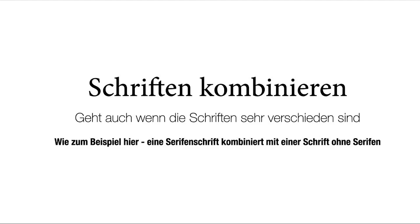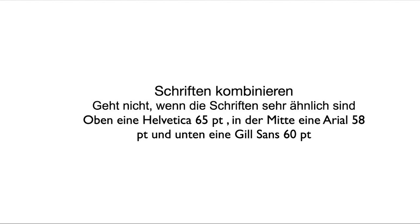Wenn man verschiedene Schriften miteinander kombinieren möchte, sollte man darauf achten, dass die wirklich sehr verschieden sind. Hier habe ich beispielsweise eine Serifenschrift — eine Antiqua-Schrift — verglichen mit einer modernen Grotesk-Schrift. So funktionieren die zueinander sehr gut. Schwierig wird es, wenn die Schriften anfangen, sich anzunähern. Hier habe ich tatsächlich eine Helvetica mit einem Arial und einer Geschlossenen nebeneinandergesetzt, auch noch die Schriftgrößen einigermaßen ähnlich, aber nicht genau gleich. Und man sieht, dass das Schriftbild uneindeutig wird — man weiß nicht, ob es die gleiche oder eine andere Schrift ist, und es stört das Auge. Es sieht fast aus, als ob der Drucker kaputt war.